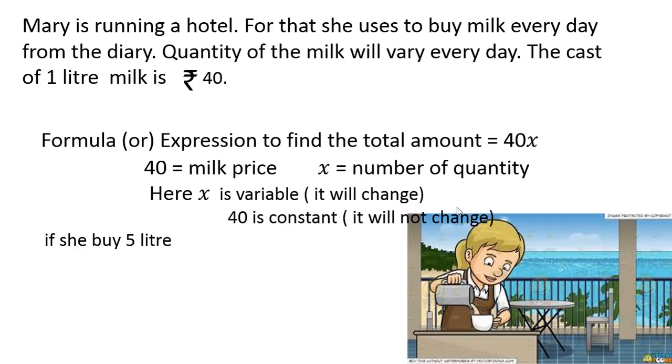If she buys five liters, five is the value of x. So 40 into x equals 200 rupees. If she buys 12 liters, that means x value is 12. We have to multiply 40 into 12, which equals 480 rupees.